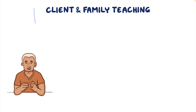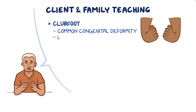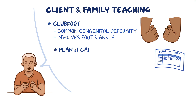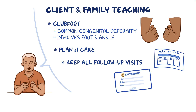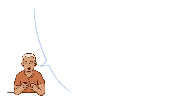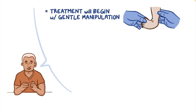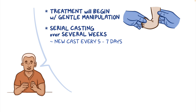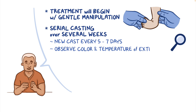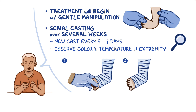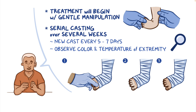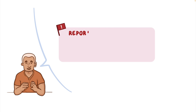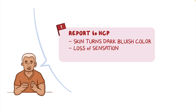For client and family teaching, explain that clubfoot is a common congenital deformity involving the foot and ankle. Review the plan of care and remind them to keep all follow-up visits to ensure full correction of the deformity. Explain that treatment will begin with gentle manipulation to stretch the ligaments and tendons, followed by serial casting over several weeks, with a new cast applied every five to seven days. While their child is in a cast, emphasize the importance of checking their child's feet and toes often. Instruct them to observe the color and temperature of the extremity, gently press on the toes, watch for it to lose color, and see the normal color return after pressure is released. Instruct them to immediately contact their child's healthcare provider if the skin turns a dark bluish color, if there's a loss of sensation, or if their child can't wiggle their toes.